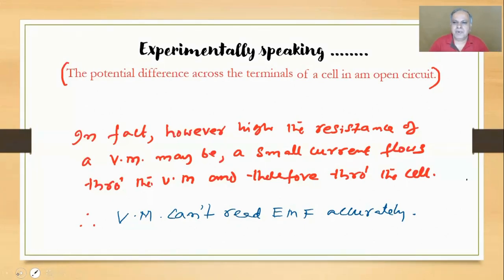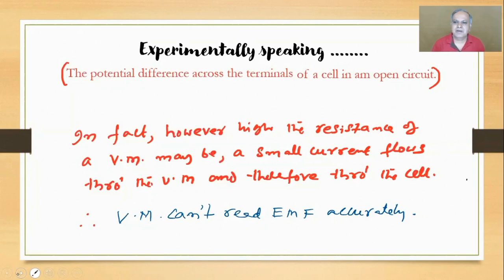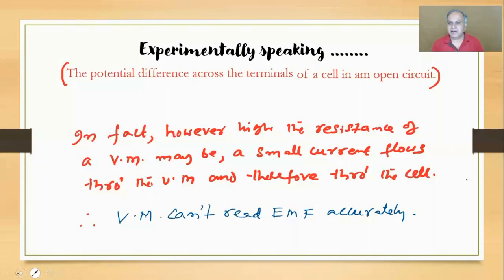Remember EMF is the original potential difference formed because of the chemical reactions - the stored energy between the two electrodes. Once current flows and energy is lost inside in the form of heat, you measure a lesser value. So the voltmeter cannot read EMF very accurately.